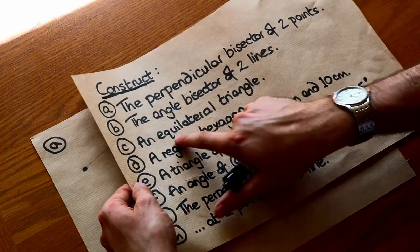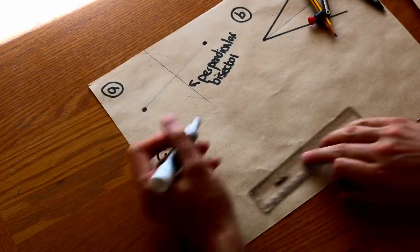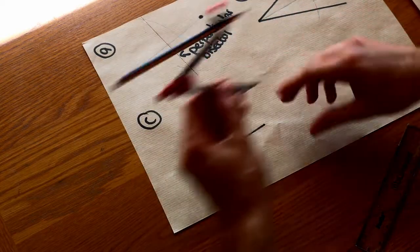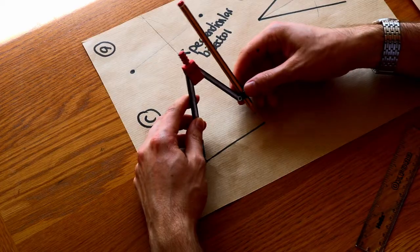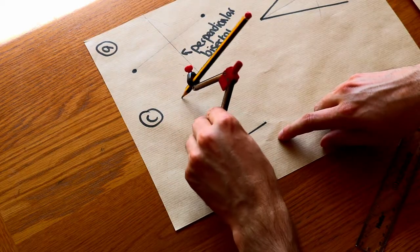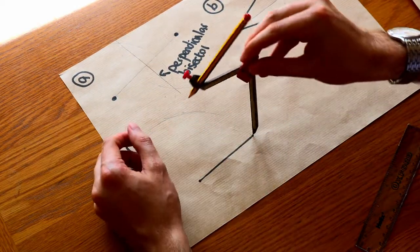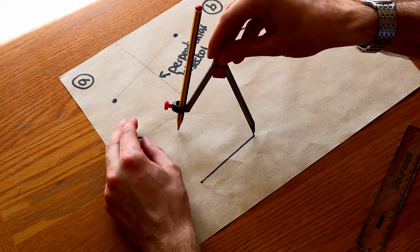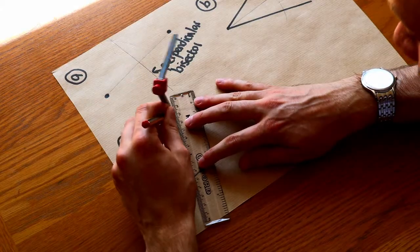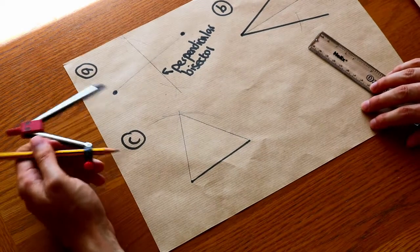Now we need to construct an equilateral triangle. This one is relatively easy. Let's say I have an initial edge here at the bottom. I put my pointy bit at one end and adjust the compass to the width of that line, then do a clear arc from that point. From the other point I put the pointy bit there and do another arc, making sure it crosses the first. That gives a point of intersection, and I draw lines from each end of the base to that intersection — giving a perfect equilateral triangle.